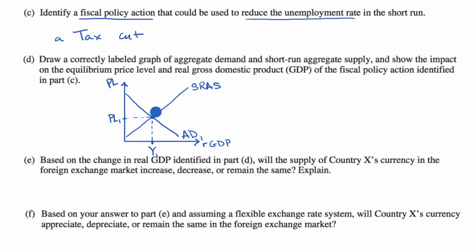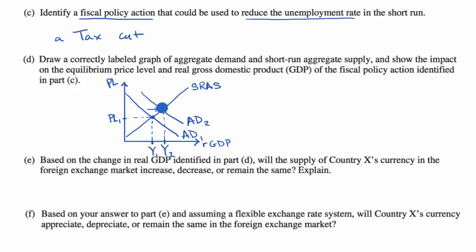With a tax cut, aggregate demand shifts to the right — at any given price level, people have more money in their pockets and will demand more. So it shifts to AD sub 2. Now we have a higher equilibrium real GDP of Y sub 2 and a higher price level of PL sub 2. So both our price level and our real GDP go up.